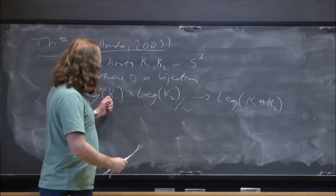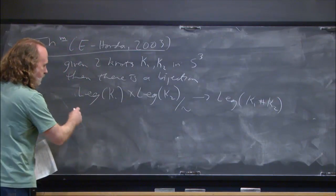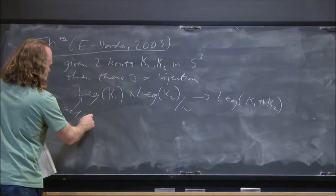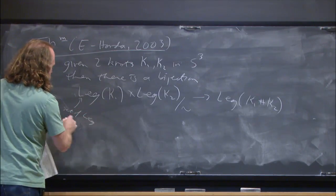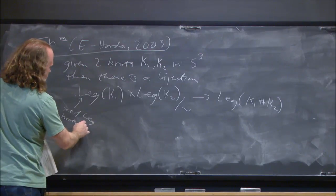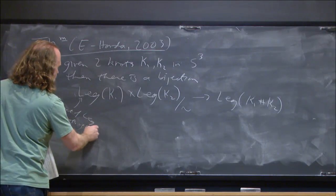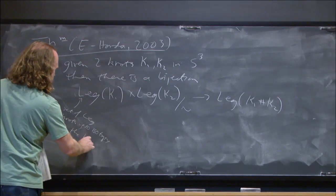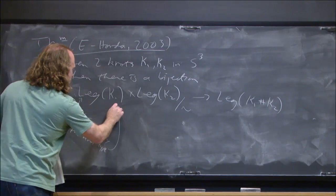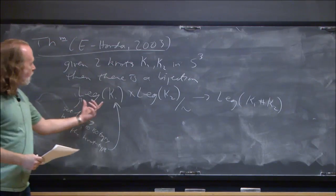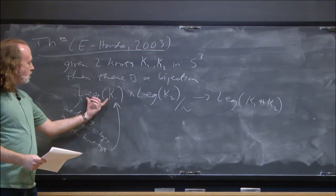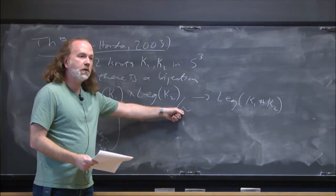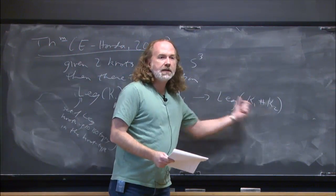This notation just means the set of Legendrian knots up to isotopy in the knot type specified. So if you know all the Legendrian knots representing the smooth knot type k1, and you know them for k2, and you understand this equivalence relation, then you actually understand the connected sum. So what is this equivalence relation?